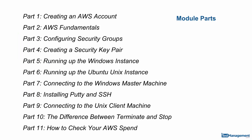So what are we going to cover? We've got 11 parts to this module. They range from creating an AWS account. In part 2 we'll talk about some of the fundamentals and the terminology. Parts 3 and 4 we'll talk about security and creating our key pairs. Parts 5 and 6 we're into running up our Windows and Unix instances.